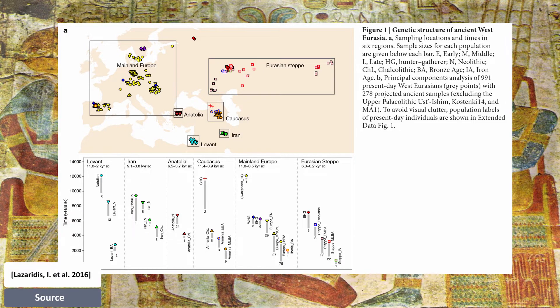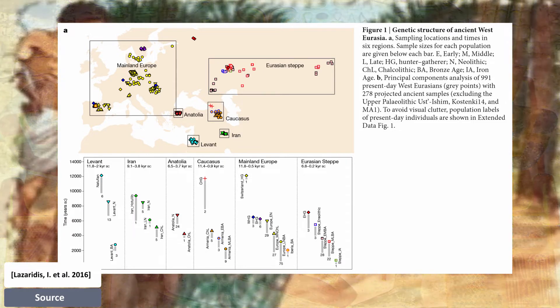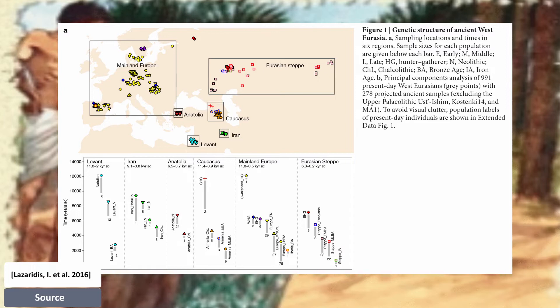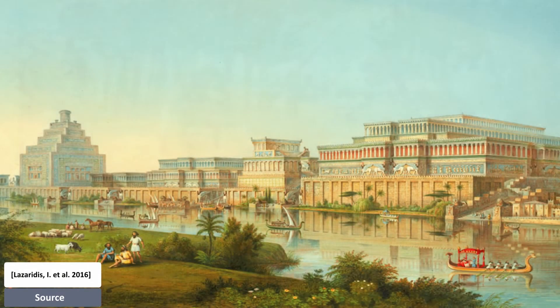Thirdly, was there continuity between the late pre-agriculture hunter-gatherers and early farming populations, or were the hunter-gatherers largely displaced by a single expansive population, as in early Neolithic Europe? Fourth, what is the genetic contribution of these early Near Eastern farmers to later populations of the Near East itself? And finally, fifth, what is the genetic contribution of early Near Eastern farmers to later populations of mainland Europe, the Eurasian steppe, and populations outside West Eurasia?